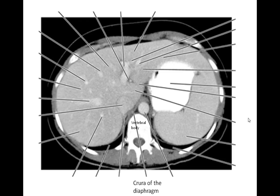The next layer up from the posterior abdominal wall muscles is the big blood vessels of the abdomen — the abdominal aorta, and to the right of the abdominal aorta, the inferior vena cava. Note that the abdominal aorta passes through the aortic opening of the diaphragm, which lies between the diaphragmatic crura, and the inferior vena cava passes upwards, still within the abdomen, to the right of the right crus of the diaphragm.